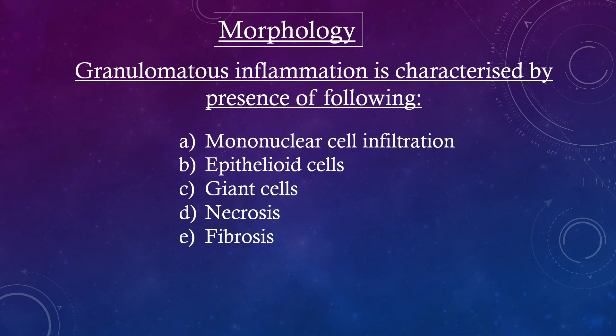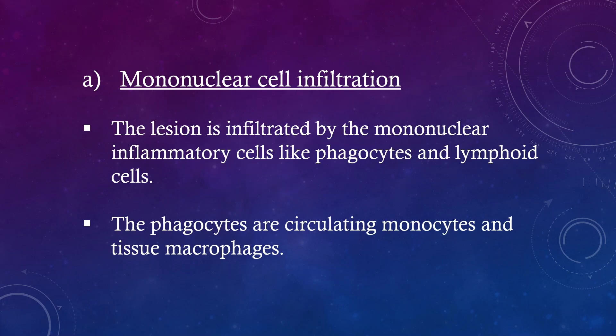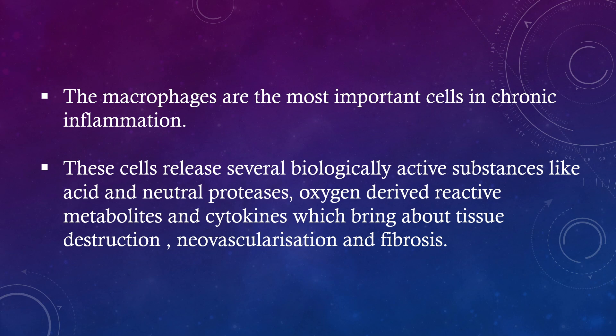Morphology. Granulomatous inflammation is characterized by the presence of the following: mononuclear cell infiltration, epithelioid cells, giant cells, necrosis, and fibrosis. The lesion is infiltrated by mononuclear inflammatory cells like phagocytes and lymphoid cells. The phagocytes are circulating monocytes and tissue macrophages. The macrophages are the most important cells in chronic inflammation. These cells release several biologically active substances like acid and neutral proteases, oxygen-derived reactive metabolites, and cytokines which bring about tissue destruction, neovascularization, and fibrosis.